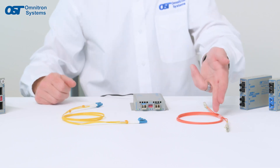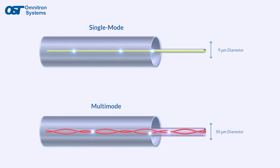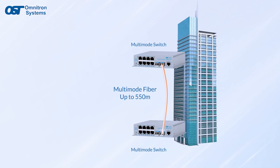Multi-mode fiber, on the other hand, has a larger core diameter and carries multiple modes of light. While it can't transmit data over long distances like single-mode fiber, it's great for short-range applications.